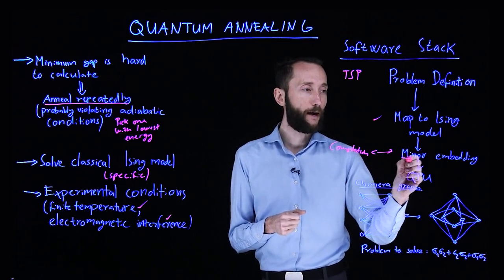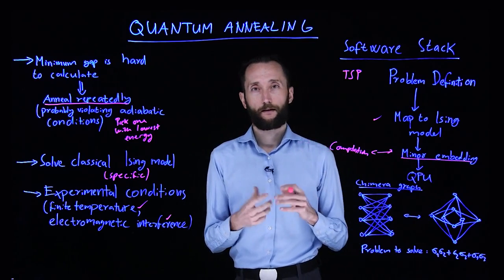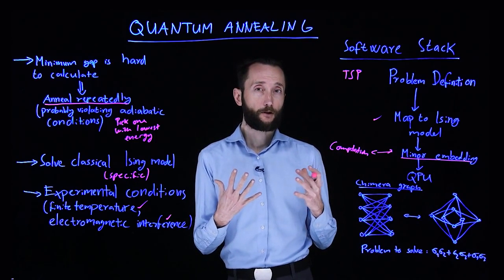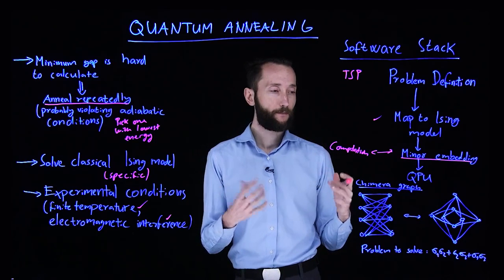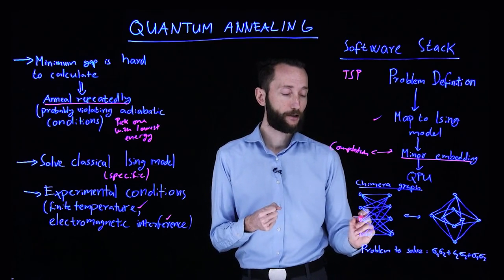And when it comes to minor embedding in an annealer, what can happen is that your qubits may not be fully connected. For instance, in this 2000 qubit architecture,